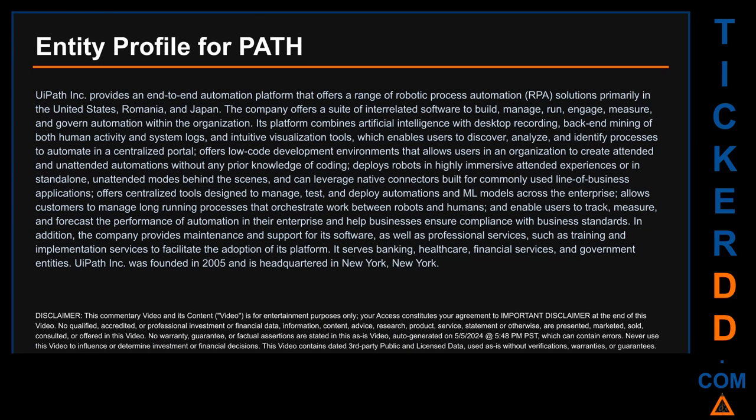The platform offers low-code development environments that allow users to create attended and unattended automations without any prior knowledge of coding. It deploys robots in highly immersive attended experiences or in standalone unattended modes behind the scenes, and can leverage native connectors built for commonly used line-of-business applications. It offers centralized tools designed to manage, test, and deploy automations and ML models across the enterprise, and allows customers to manage long-running processes orchestrating work between robots and humans. The company provides maintenance, support, professional services such as training and implementation, and serves banking, healthcare, financial services, and government entities. UiPath Inc. was founded in 2005 and is headquartered in New York, New York.